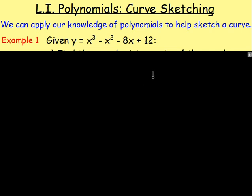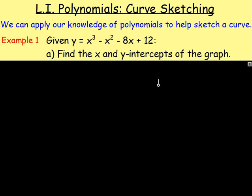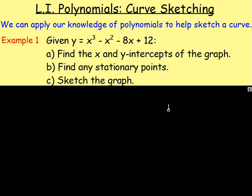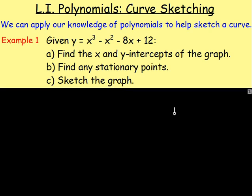Example 1, given y equals x cubed minus x squared minus 8x plus 12. First of all, find the x and y intercepts of the graph. In other words, where it's crossing the x and y axis. Part b, find any stationary points. And part c, everybody's favourite, sketch the graph.